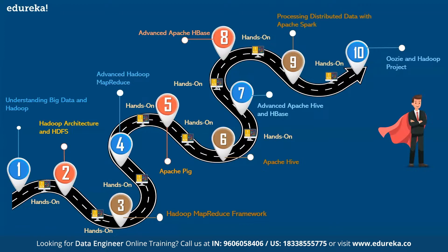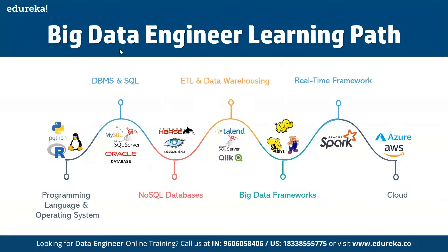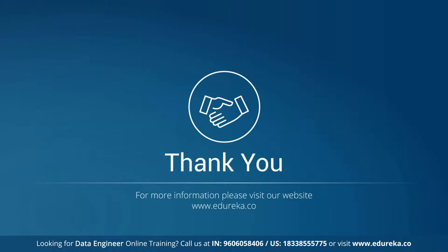In the last class you'll learn about Oozie and a Hadoop project — what Oozie is, how to create different integrations, and all such things with practical hands-on. At the end you will become a superhero! The Big Data Engineering learning path starts with programming language, then DBMSs and SQL, then NoSQL databases, then ETL and data warehousing, big data frameworks, real-time frameworks, and finally cloud. Thank you so much for joining this session — have a great day ahead, bye!